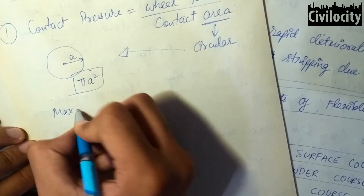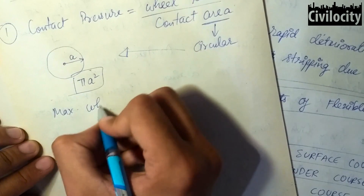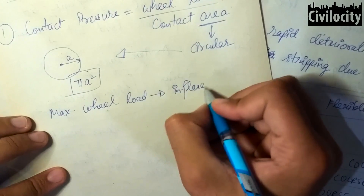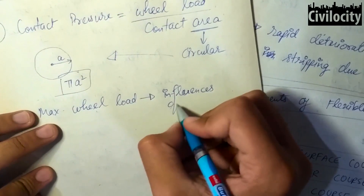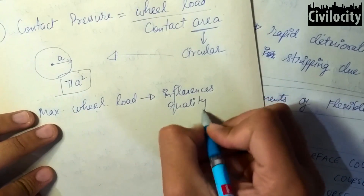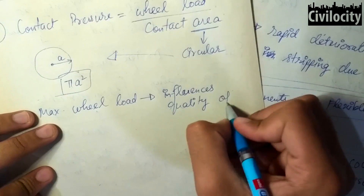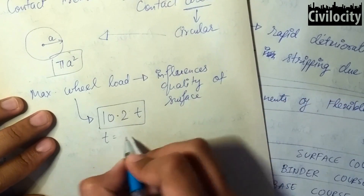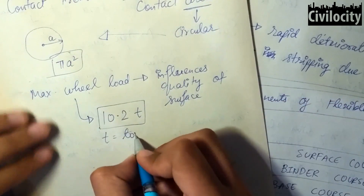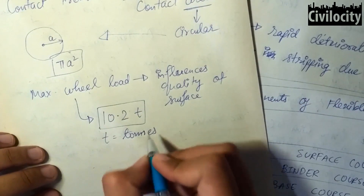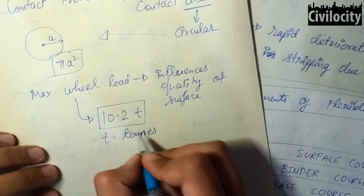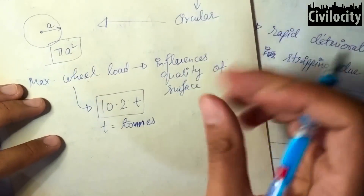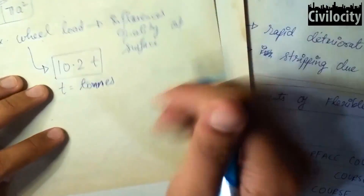It is necessary to find out the maximum wheel load as it influences the quality of the surface. As per IRC, the maximum wheel load recommended for heavy commercial vehicles is 10.2 tons. The contact pressure for heavy vehicles is between 7 to 9.5 kg/cm², and for commercial vehicles it is 5 to 7 kg/cm².